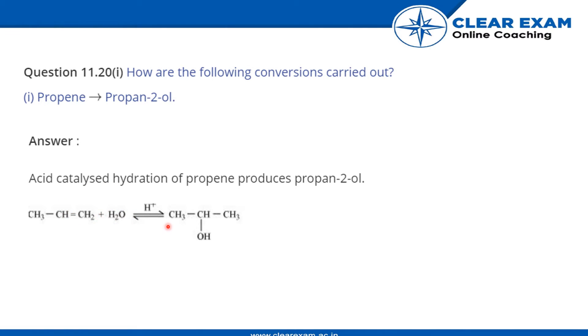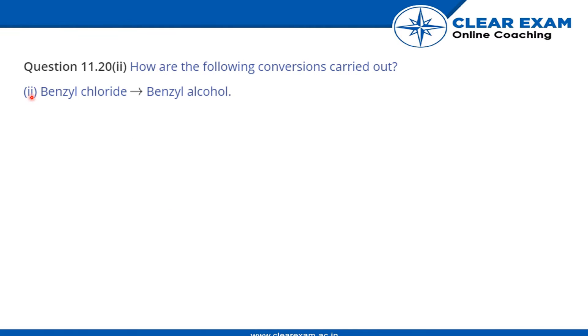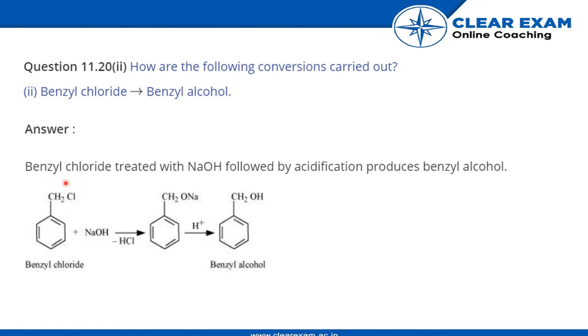Second is benzoyl chloride to benzoyl alcohol. This is benzoyl chloride. It reacts with NaOH so it performs an SN2 reaction and Cl leaves. Finally we add H+ so that O- gets protonated and benzoyl alcohol is formed.